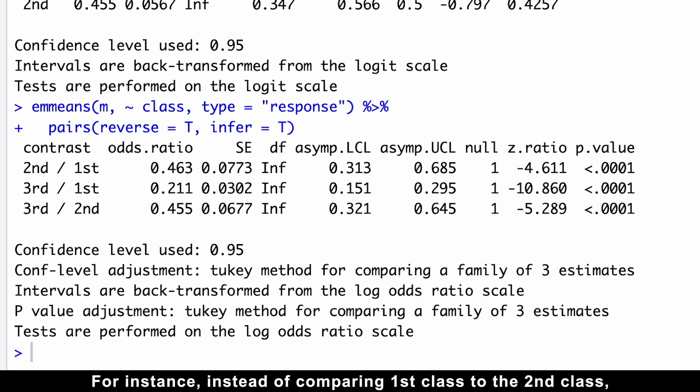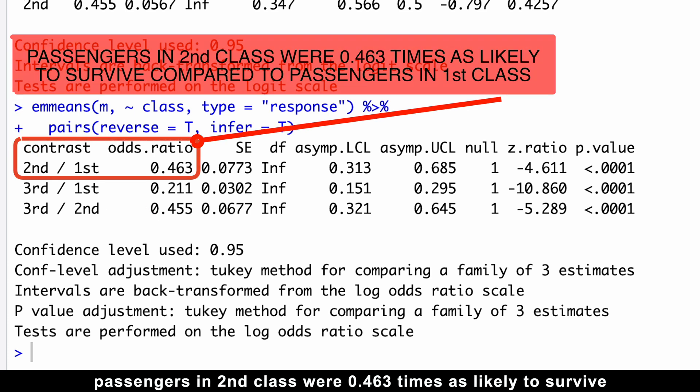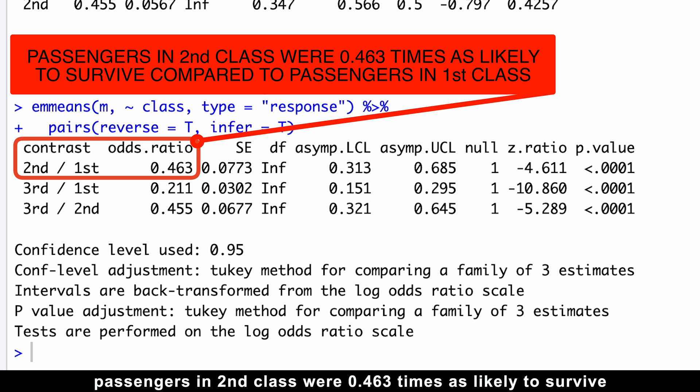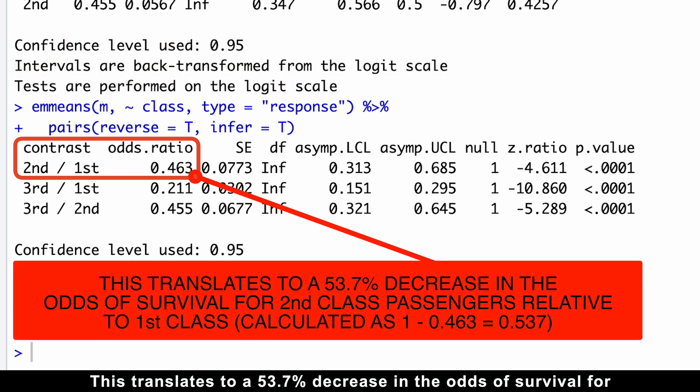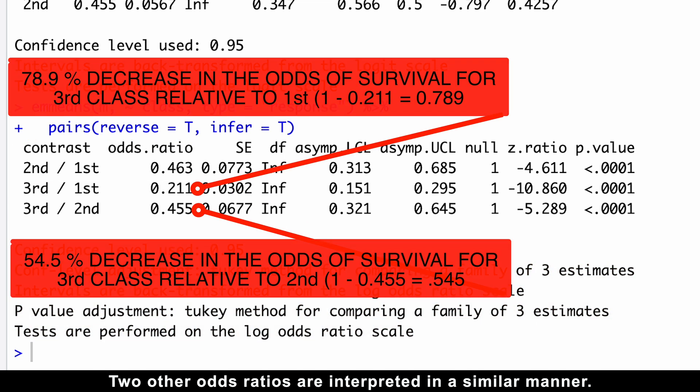For instance, instead of comparing 1st class to the 2nd class, we can reverse the comparison and focus on 2nd class relative to the 1st class. Specifically, passengers in 2nd class were 0.46 times as likely to survive compared to passengers in 1st class. This translates to 53.70% decrease in odds of survival for 2nd class passengers relative to 1st class. The two other odds ratios are interpreted in a similar manner.